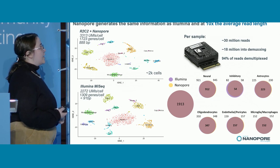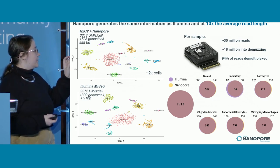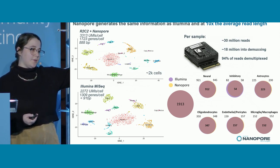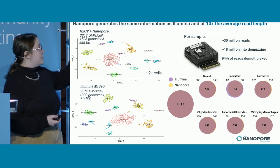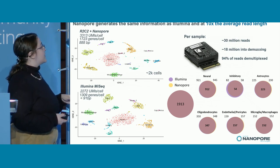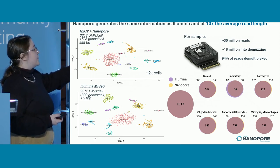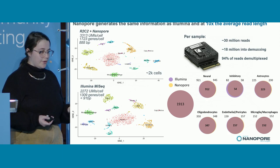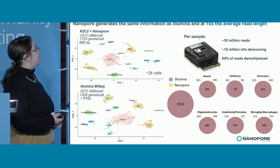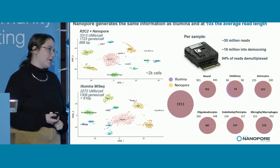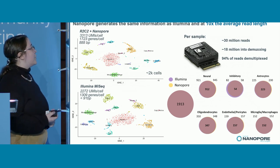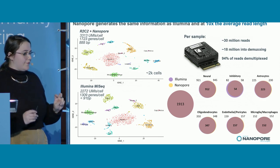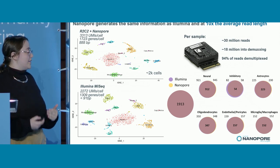What I'm showing you now is a dataset taken from one mouse hippocampus. Half of the full-length cDNA goes into the canonical 10X pipeline — fragmented and sequenced on Illumina. The other half went into the R2C2 prep and was sequenced on PromethION. I'm showing t-SNE representations of both datasets, and you can see that we pull out the same cellular communities with Nanopore alone as with Illumina. This gives us a way to do typical 10X gene-level expression analysis without the need for Illumina, saving money per sample.